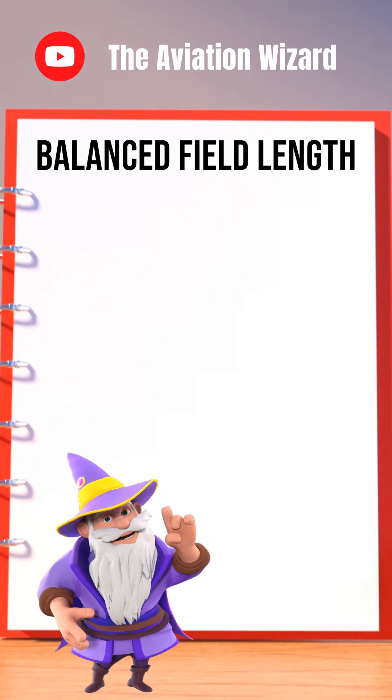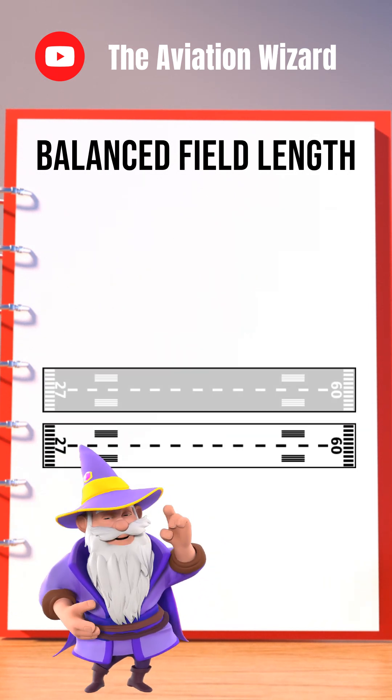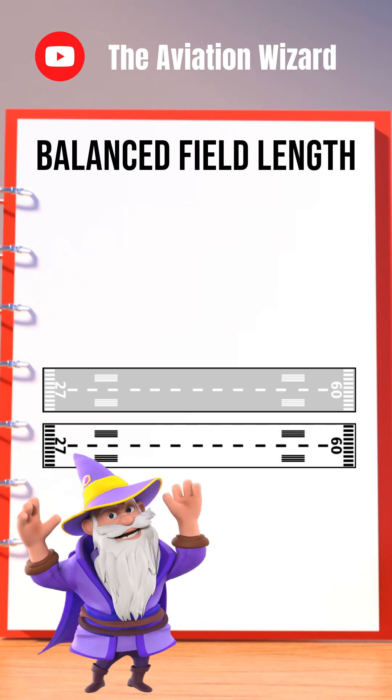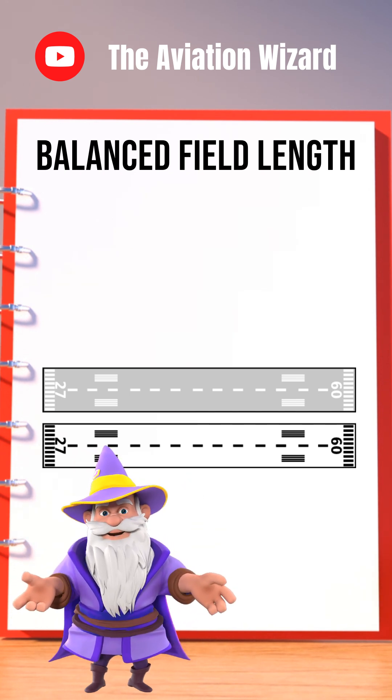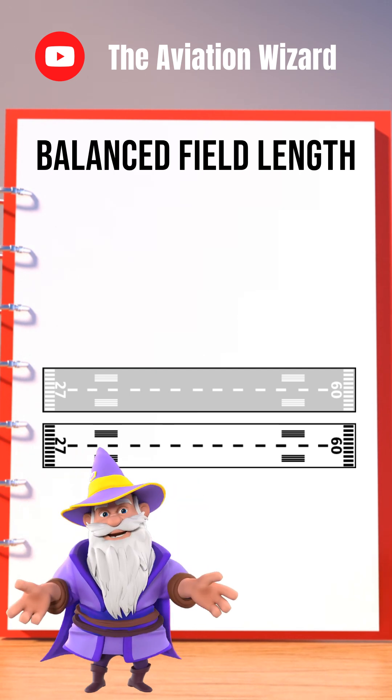If the runway is longer than the balanced field, you may have flexibility to adjust V1. But if the runway is short and unbalanced, it could mean compromised options in a critical moment.